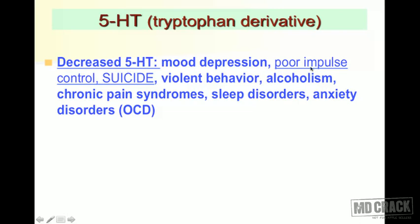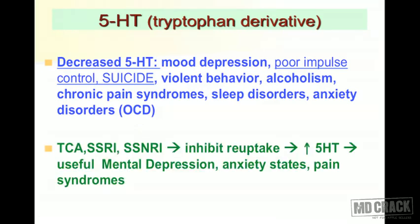With less 5-HT, the patient has very poor impulse control, which can lead to suicide or violent behavior. Decreased 5-HT is also associated with alcoholism, chronic pain syndromes, sleep disorders, and anxiety disorders — especially obsessive compulsive disorder. TCAs, SSRIs, and SSNRIs (selective serotonin and norepinephrine reuptake inhibitors) all inhibit amine reuptake, increasing 5-HT, which is useful in managing depression.